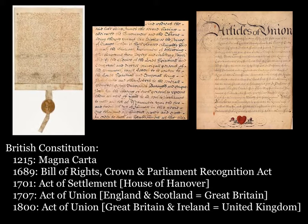By the middle of the 19th century, there were only three other acts which served as part of the British Constitution, and all those really did was recognize the growing British Empire, the addition of Scotland and then Ireland. Thus, any reform of the British political system, such as the 1832 reform which expanded the admittedly male electorate, reformed just how the system worked, not the actual governance of the system, which meant that enforcement was quite varied.